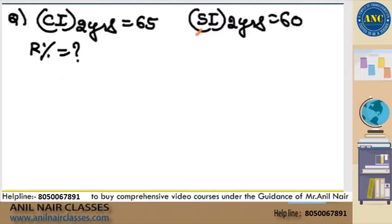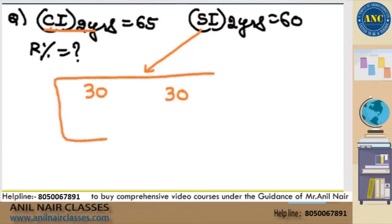SI for two years is 60. First year it will be 30. Second year it will be 30. But CI for two years is 65. Total combination I should get 65. Already 60 is present. How much extra I should get? 5.